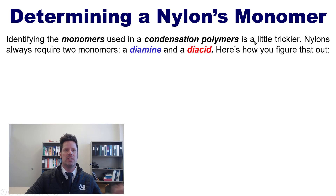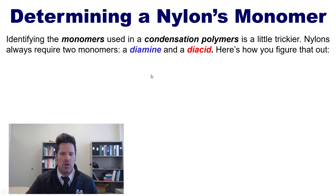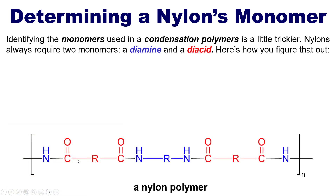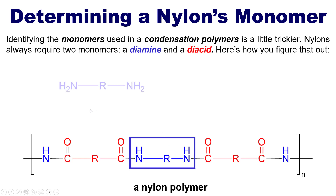Identifying monomers for condensation polymers is a little trickier than for addition polymers. Nylons always require two monomers: a diamine and a diacid. To find them, draw the structure of your nylon — using a generic structure where R could represent various carbon or carbonyl groups — then circle or box the two nitrogens with whatever carbon groups are between them. Pull that piece out, add one additional H to each end, and that is the diamine — one of the two ingredients needed.